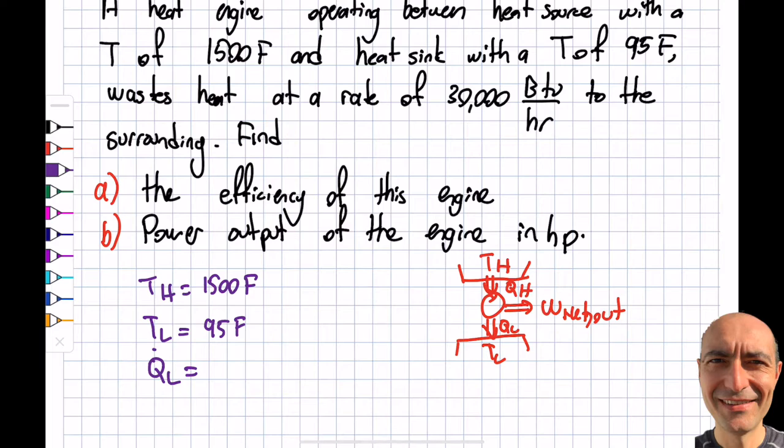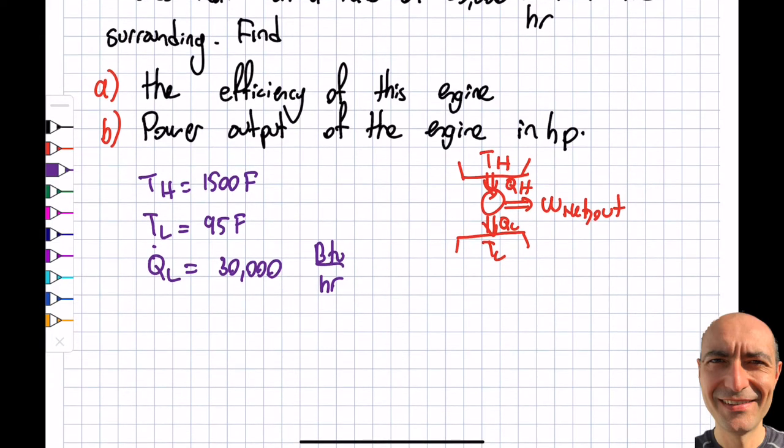TH = 1500°F, TL = 95°F—huge difference. The waste heat QL = 30,000 BTU per hour. Part A asks for the efficiency of the engine.